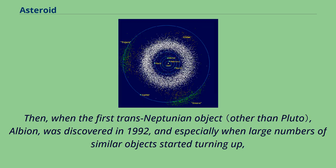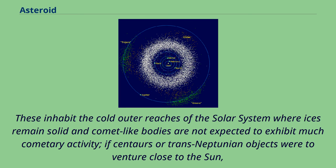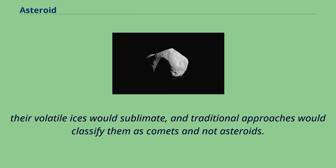Then, when the first trans-Neptunian object, Albion, was discovered in 1992, and especially when large numbers of similar objects started turning up, new terms were invented to sidestep the issue: Kuiper belt object, trans-Neptunian object, scattered disk object, and so on. These inhabit the cold outer reaches of the solar system where ices remain solid and comet-like bodies are not expected to exhibit much cometary activity. If centaurs or trans-Neptunian objects were to venture close to the sun, their volatile ices would sublimate, and traditional approaches would classify them as comets and not asteroids.